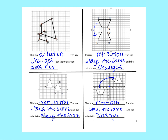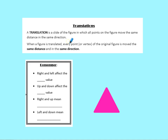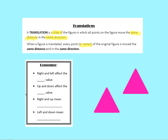Go ahead and move on to page two. The first type of transformation we're focusing on today is translations. A translation is the slide of a figure in which all points move the same distance in the same direction. Every point or vertex of the original figure moves the same distance in the same direction. The original shape becomes a prime shape — we use that notation with the little apostrophe to mark the transformed figure.